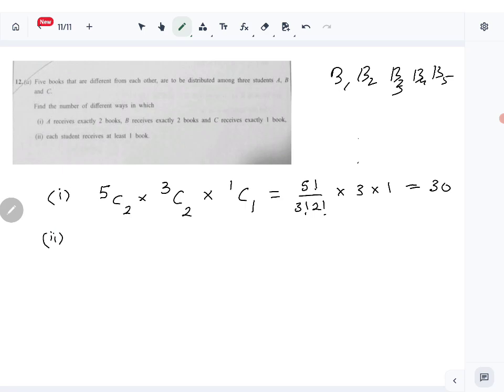Then the second part is: each student receives at least one book. So we have to go through all the cases. Let me break this down - A, B, C. Each student has to receive at least one book.